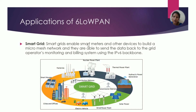SmartGrid: SmartGrid enables smart meters and other devices to build a micro-mesh network. They are able to send data back to the grid operator, monitoring and billing systems using the IPv6 backbone. SmartGrid is used in factories, smart houses, cities, offices, electric vehicles, wind power plants, solar power, and terminal power plants.